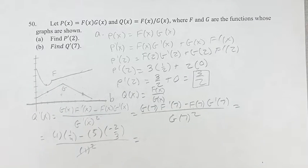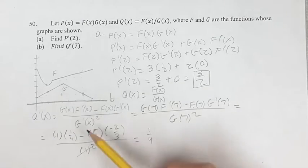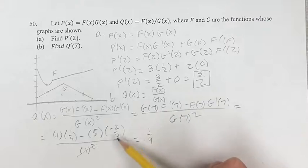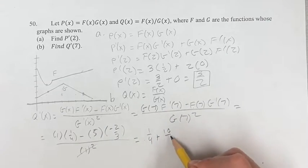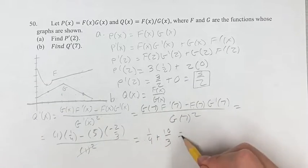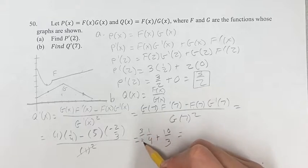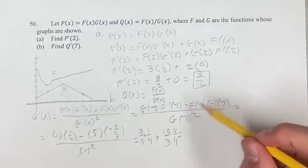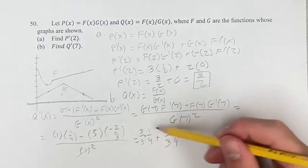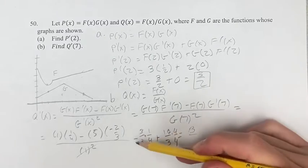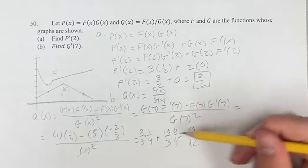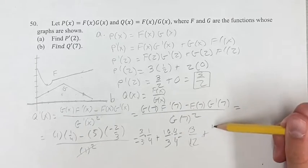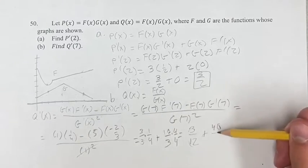So we're dividing by 1, so we can basically just ignore the denominator. We have 1 times 1 fourth is 1 fourth. Minus 5 times negative 2 thirds is plus 10 thirds. Simplifying this, multiply this by 3 over 3, multiply this by 4 over 4 to get a common denominator. So we get 3 times 1 is 3 over 3 times 4 is 12, plus 10 times 4 is 40 over 3 times 4 is 12.